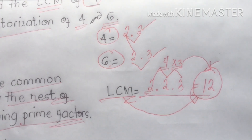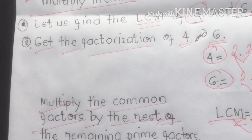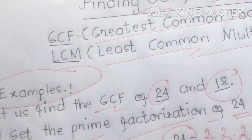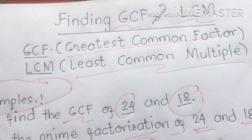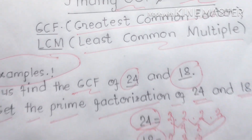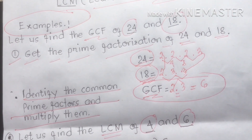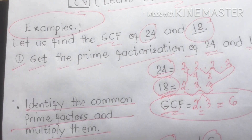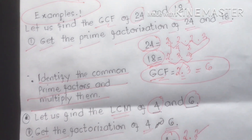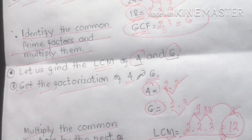Did you understand, my dear students? Please focus on our subject matter today — finding the Greatest Common Factor and Least Common Multiple. This is very easy once you focus on how to get the GCF and LCM between the given numbers. Please keep watching until the end of our discussion.